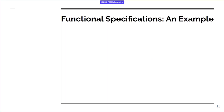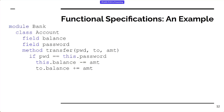Moving on to a concrete example. Suppose I've written some banking software: we've got an Account, it's pretty simple, it's got a balance, it's got a password, and it's got a transfer function. The transfer function doesn't do anything particularly special — give it the right password and you'll reduce your balance. We don't actually have any way to put money in, but you can take money out.